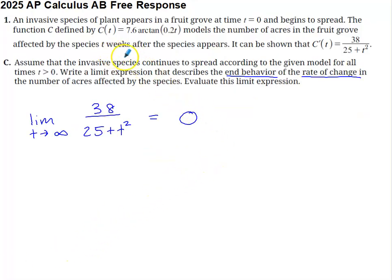Part C says assume the invasive species continues to spread according to the given model for all times that are positive. We're asked to write a limit expression that describes the end behavior of the rate of change of the number of acres affected by the species. Evaluate the limit expression. A lot of confusion initially about this part of the problem, I feel. I think if you recognize a couple of key details, you're going to realize it's not too bad. End behavior would mean what happens over the course of the long haul, right? The long period of time as time approaches infinity. And it's the end behavior of the rate of change.